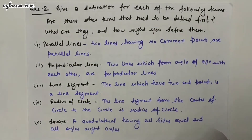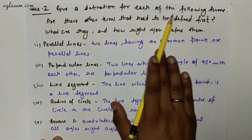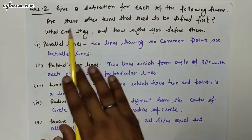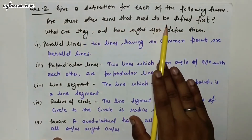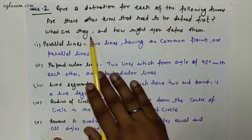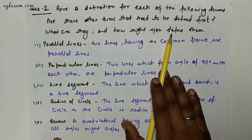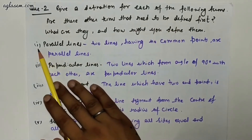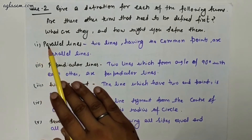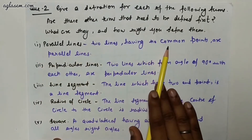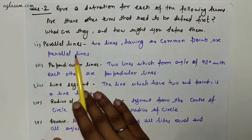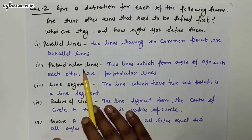Question number two: give a definition for each of the following terms. Are these terms defined? What are they and how might you define them? The first term is parallel lines — two lines having no common points are parallel lines. Second, perpendicular lines — two lines which form an angle of 90 degrees with each other are perpendicular lines.